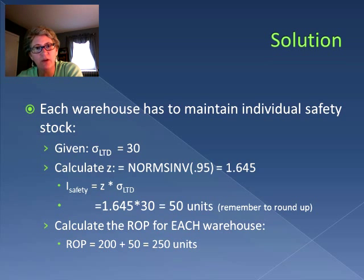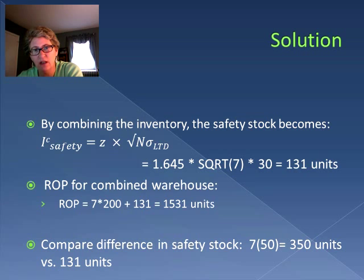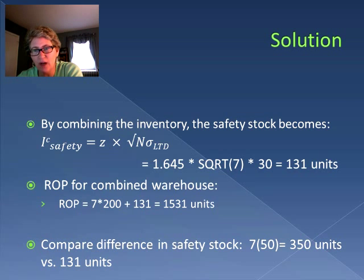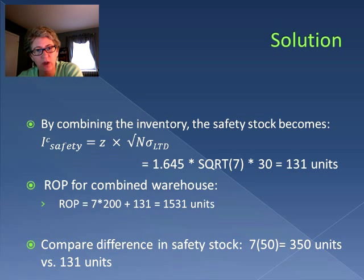Now what happens if we have seven warehouses and combine them together? We use the formula for combined safety stock with the same z-statistic of 1.645 and the same standard deviation of lead time demand of 30, but now we're combining seven warehouses together, so we multiply by the square root of seven. Our total safety stock for all seven warehouses combined is 131 units. The reorder point is seven times 200 for lead time demand — since 200 was one warehouse and we now have seven — plus our safety stock of 131, giving a reorder point of 1,531 units.